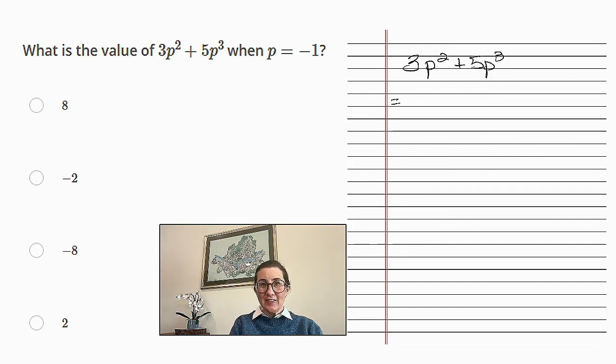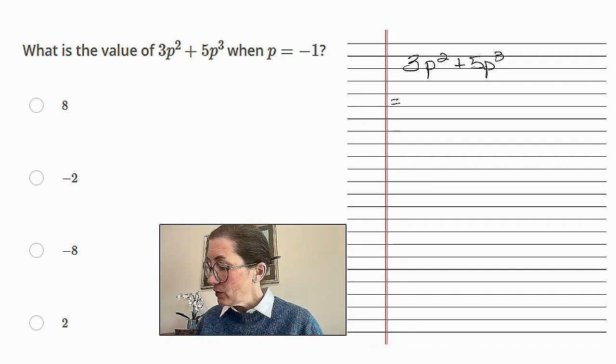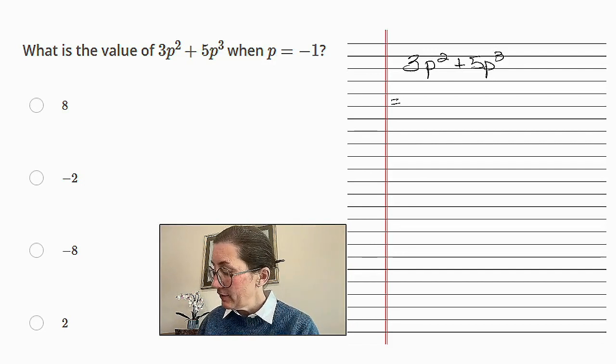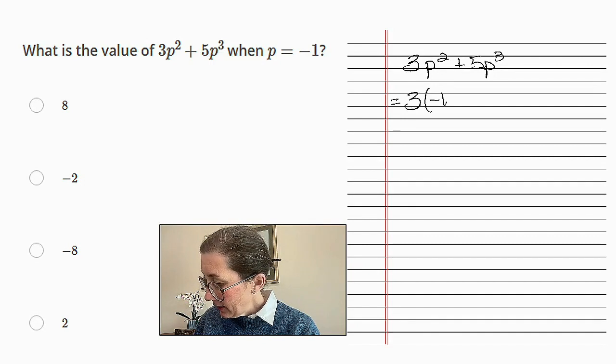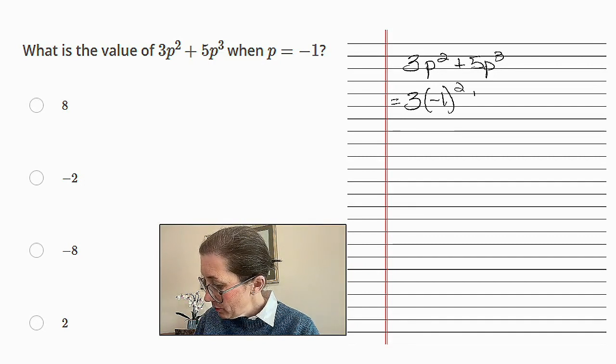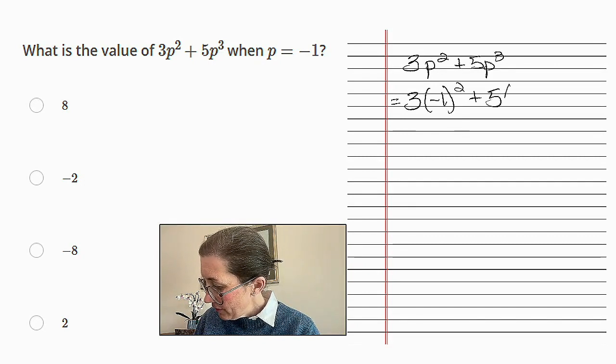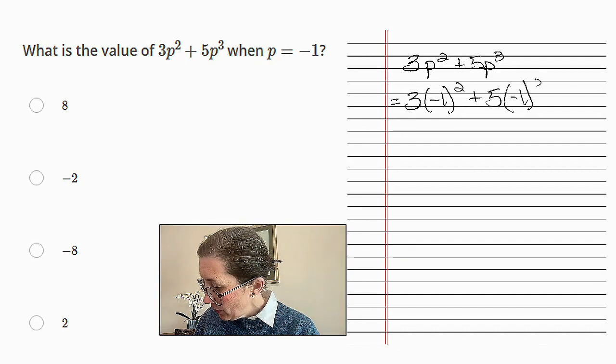On to our third question. What is the value of 3p² + 5p³ when p equals -1? Alright, we're going to plug in the value of -1 first. So 3 and then (-1)² plus 5, (-1)³.